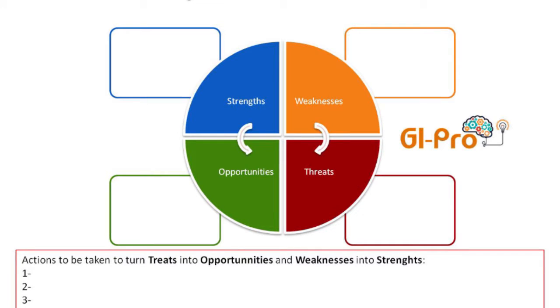After identifying your weaknesses, your strengths, the opportunities, and the threats of the market, you are going to create a prescription or an action plan. What can you do to turn the threats into opportunities and the weaknesses into strengths?